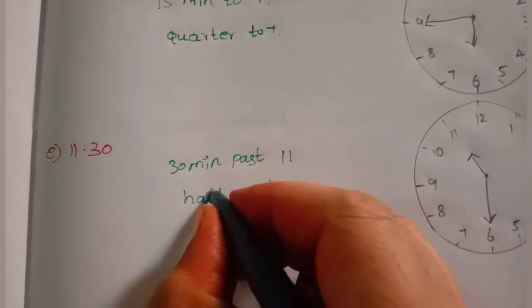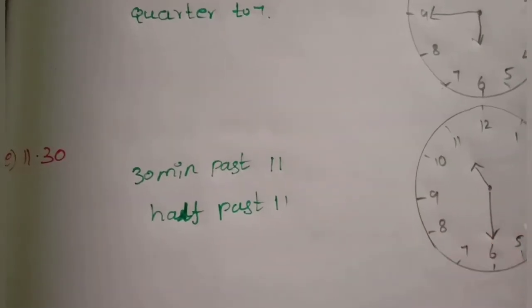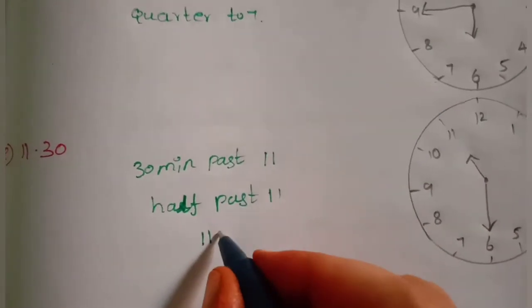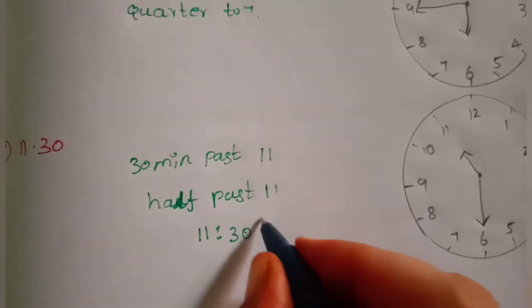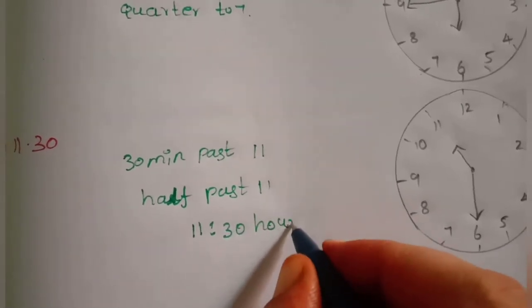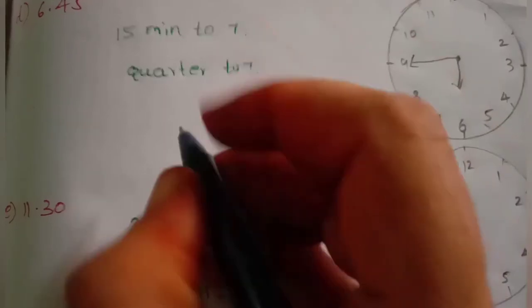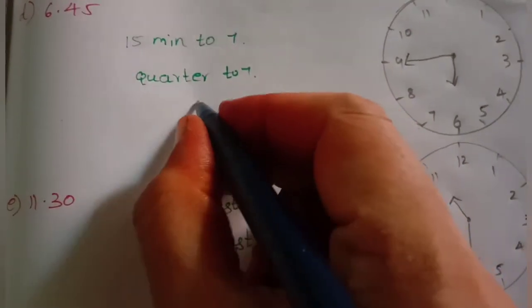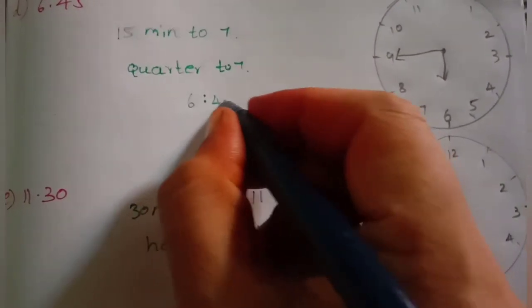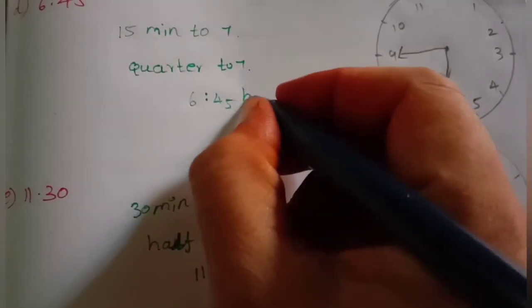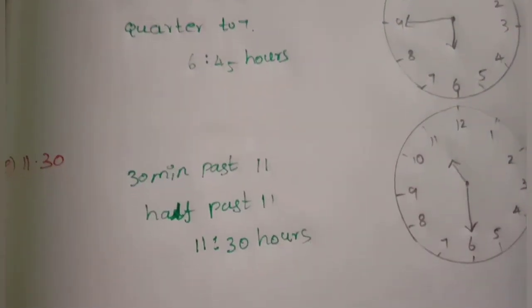Okay friends, what do we say about time? Level 35: 6:45. Okay friends.